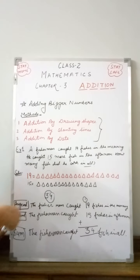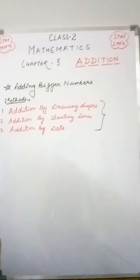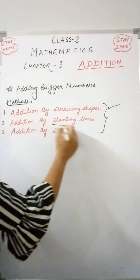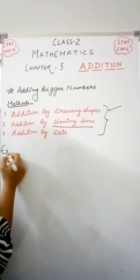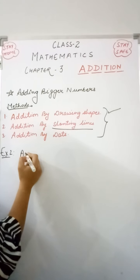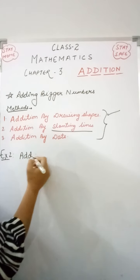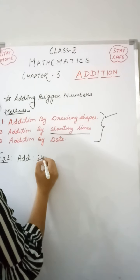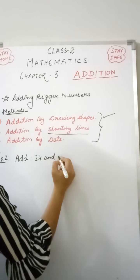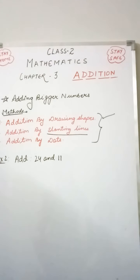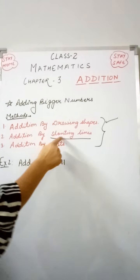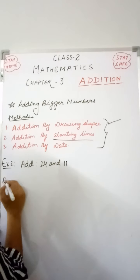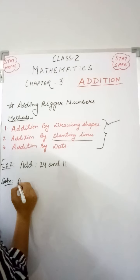If it is a word problem, we also write the statement. If there is no word problem, we can directly do the sum. Now the second method is slanting lines. This time I have not taken a word problem — I have chosen a single question: 24 plus 11. So this time we have to draw slanting lines.